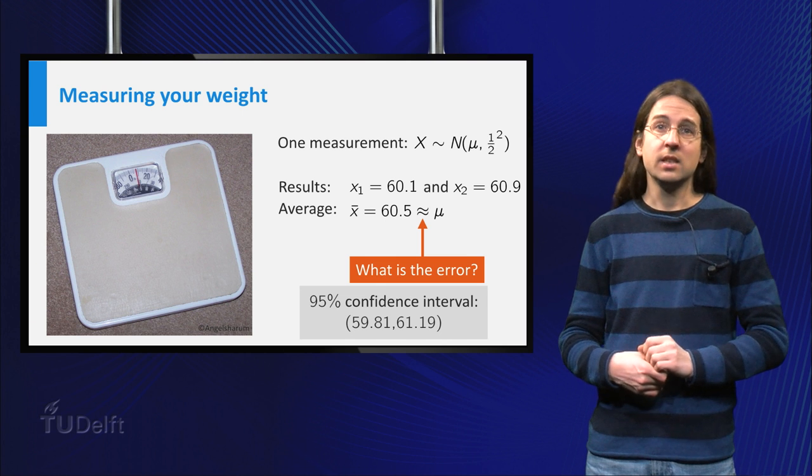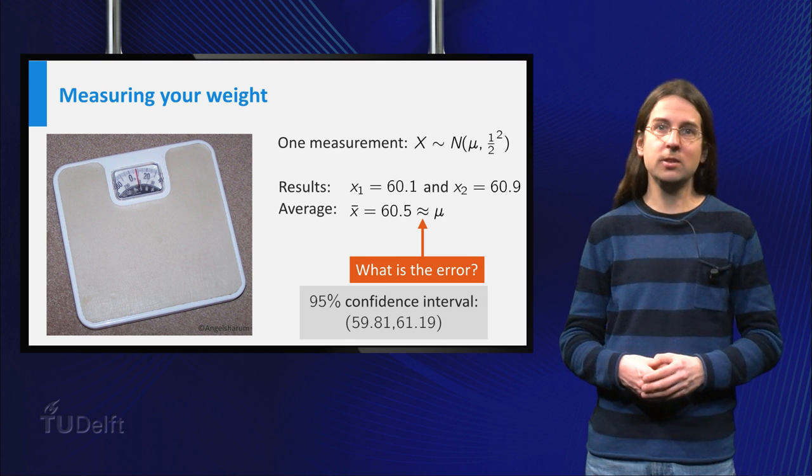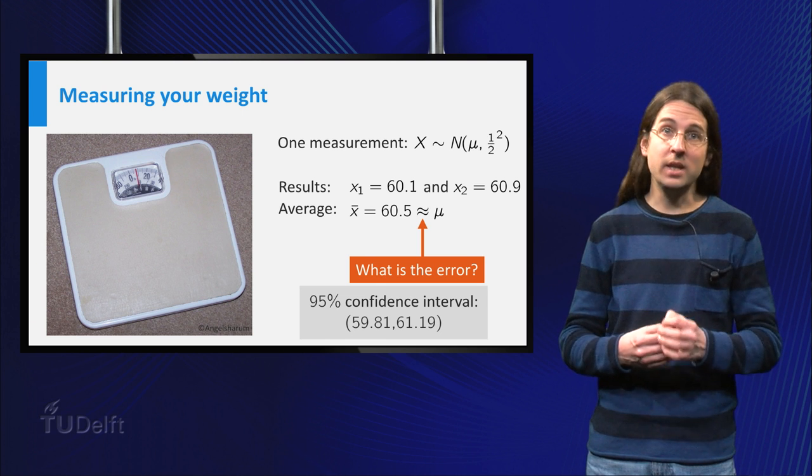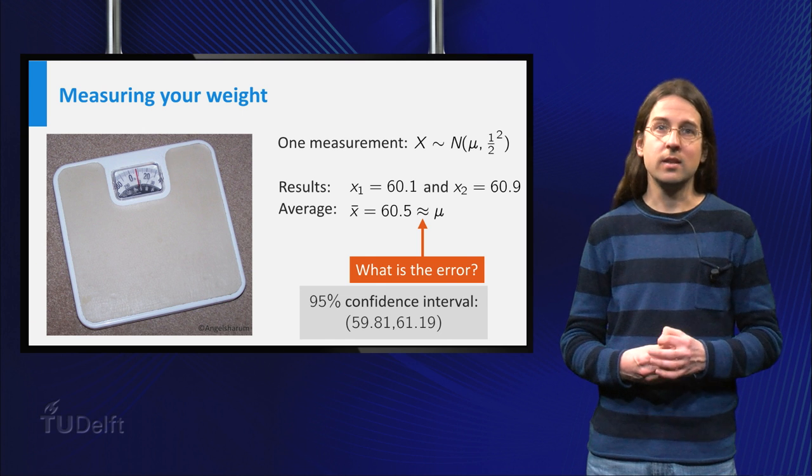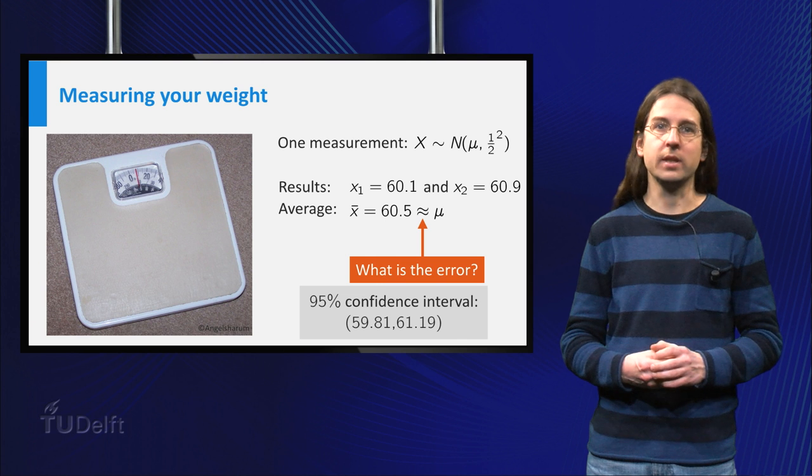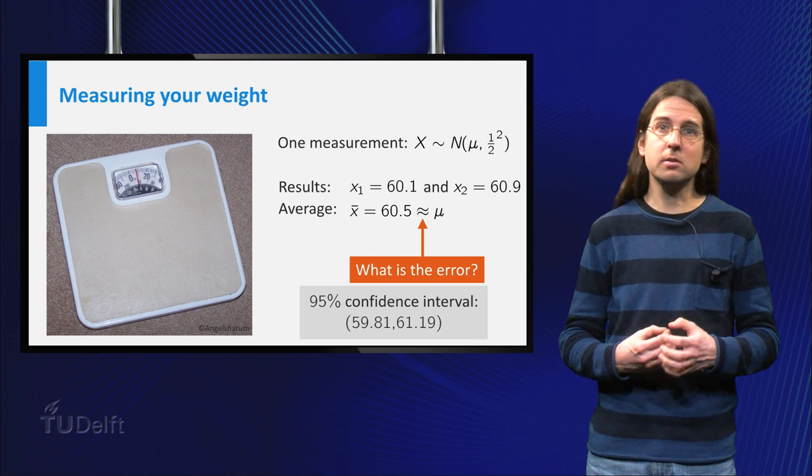That is, if you were to repeat the experiment of weighing yourself twice, and then calculating such an interval many times over, in 95% of the cases the interval you calculate will contain your true weight. Let us now see how you can calculate this interval.